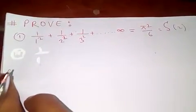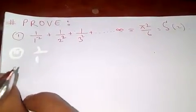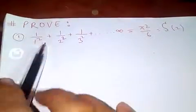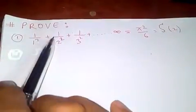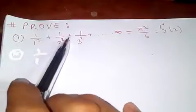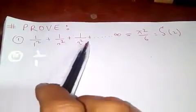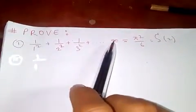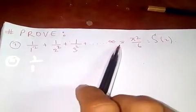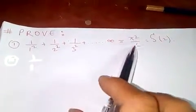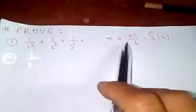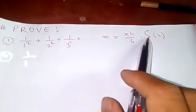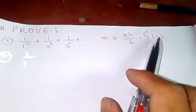Thanks for watching my video. Today I'm going to prove that 1/1² + 1/2² + 1/3² + ... up to infinity equals π²/6, which is equal to the Riemann zeta function of 2.